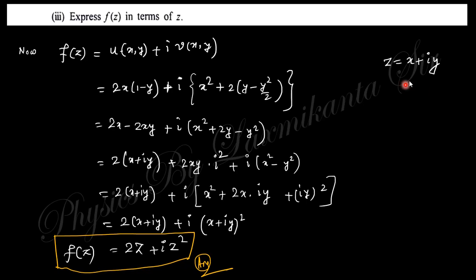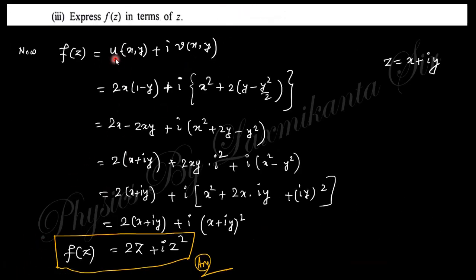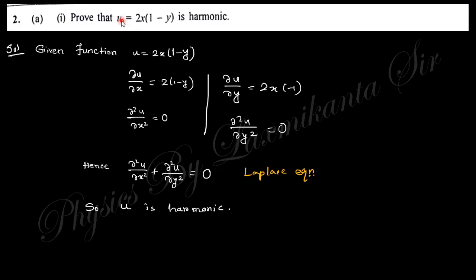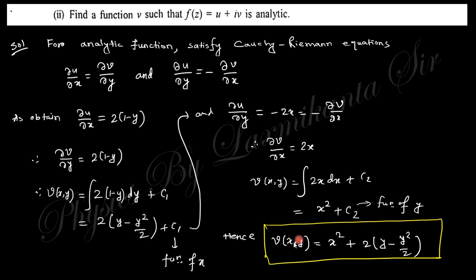The next part says: express f(z) in terms of z. We know z = x + iy, and f(z) = u + iv. So substitute the expression for u = 2x(1−y) already given, and v = x² + 2y − y²/2 that we just found.